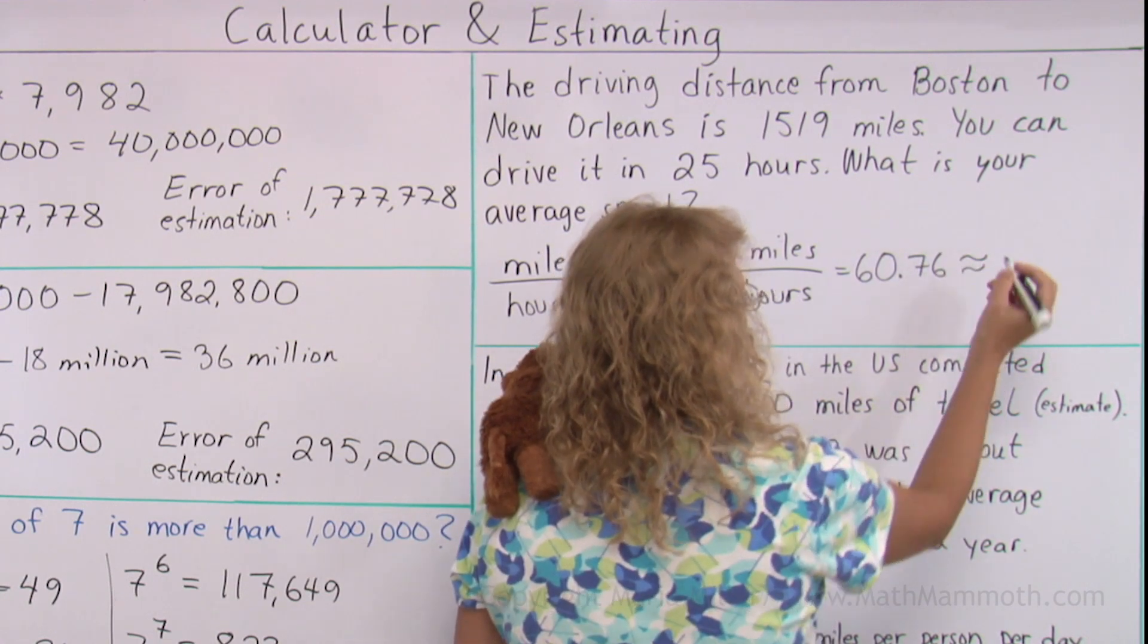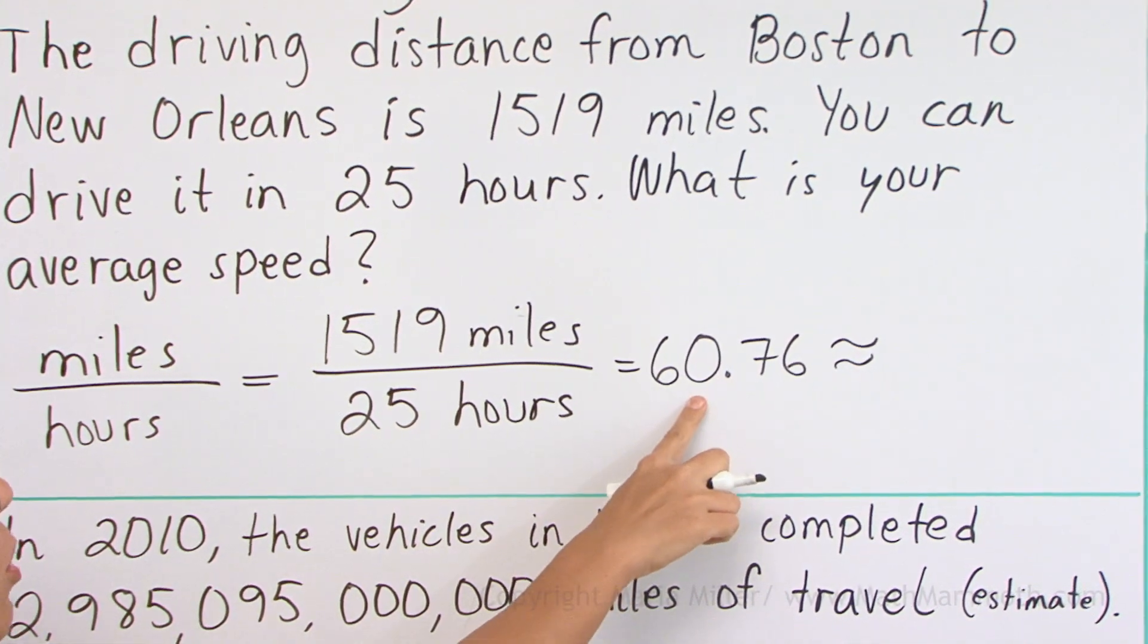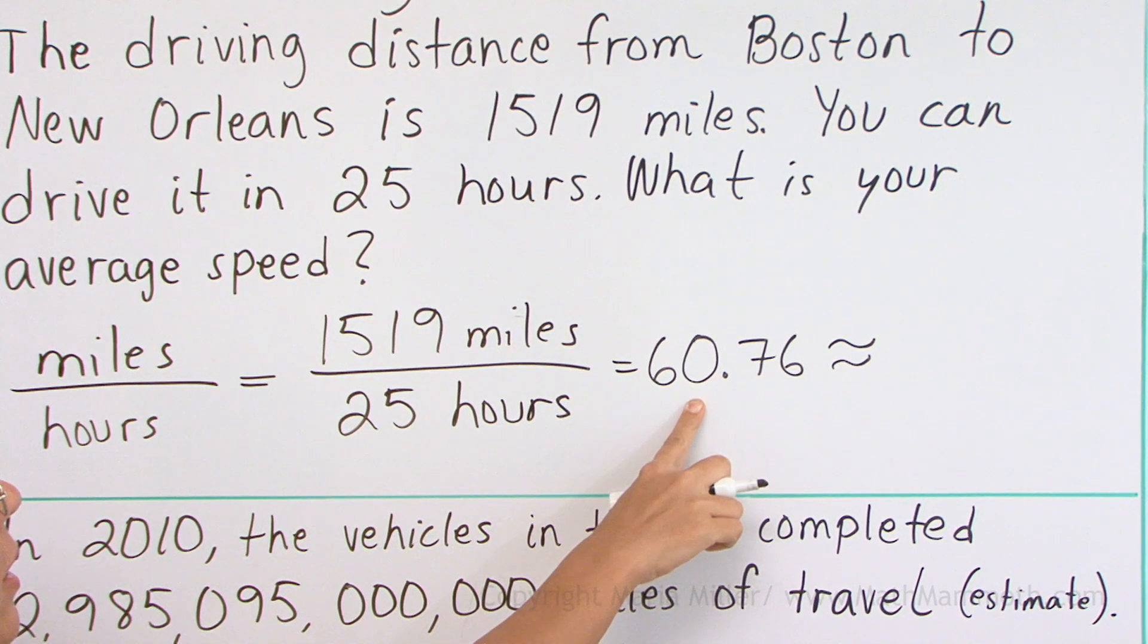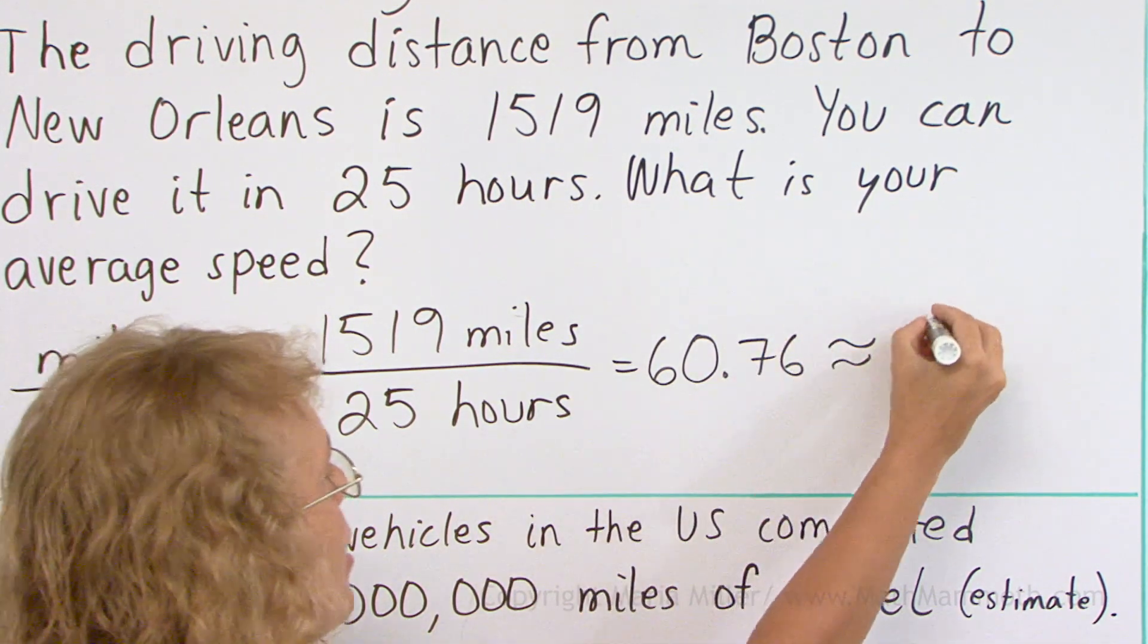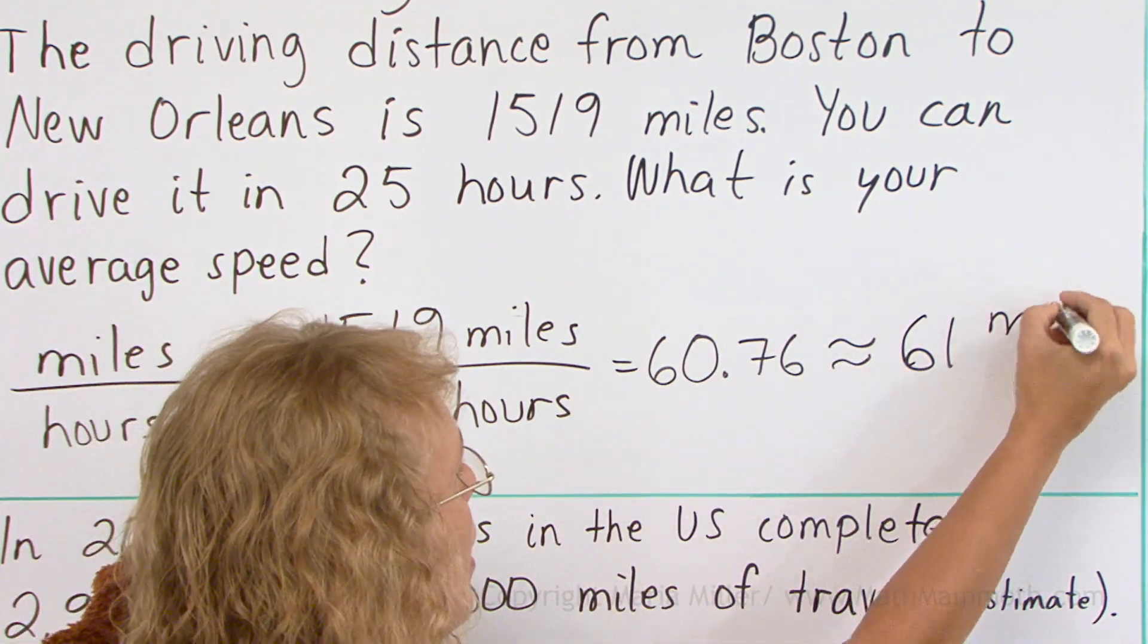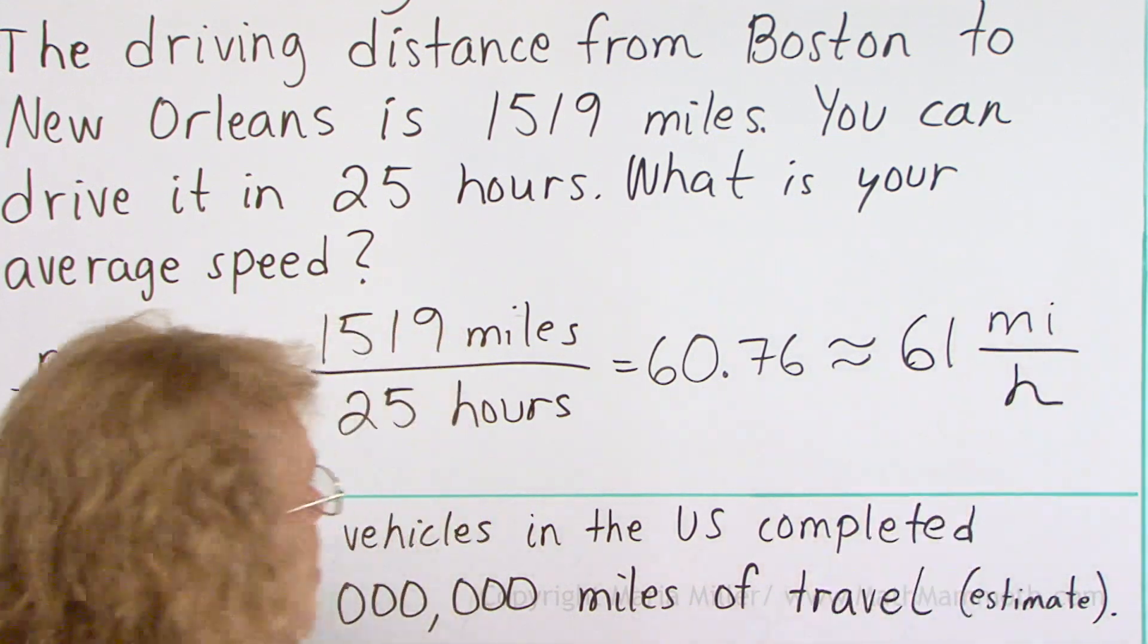It gives me a decimal number, 60.76. But I'm going to round it to whole miles per hour so that I will get 61 miles per hour.